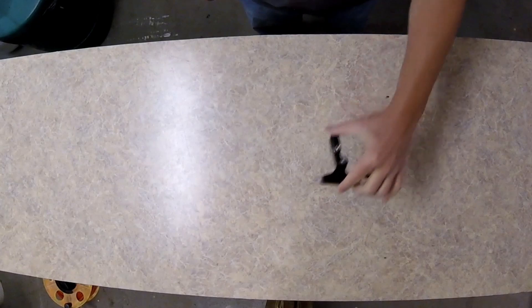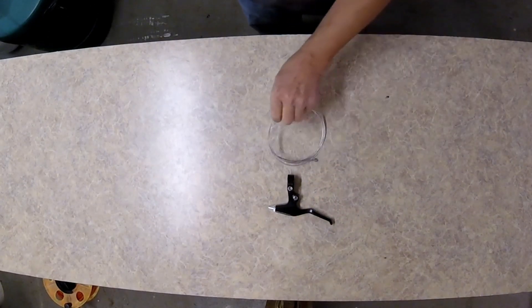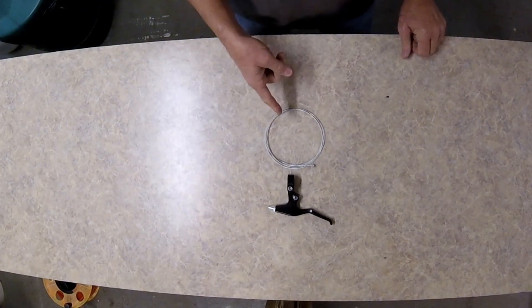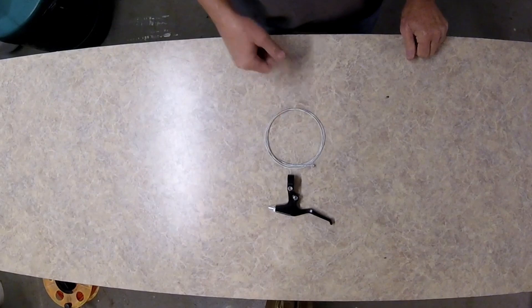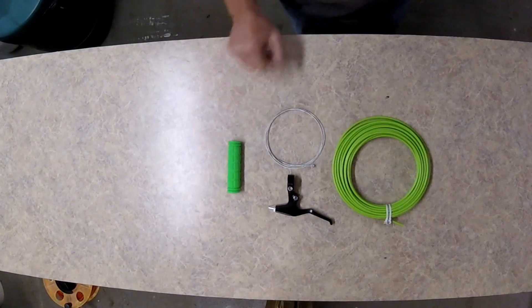Okay, we're going to need a bicycle brake lever, shifter cable - this one is 66 inches long - shifting sheathing, and a bicycle grip. Thin is good.